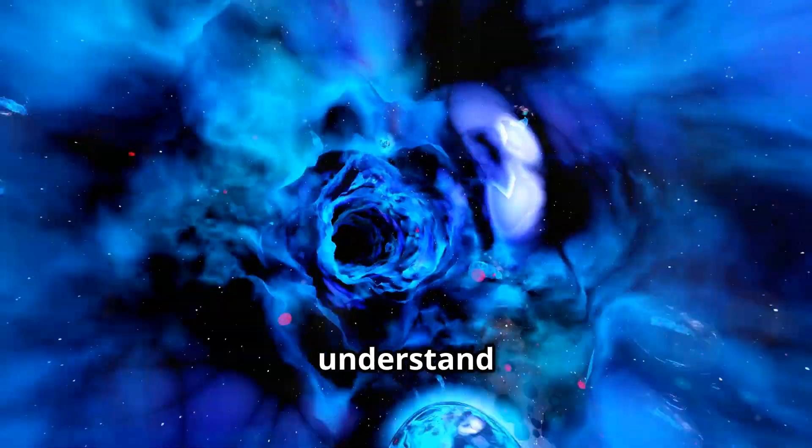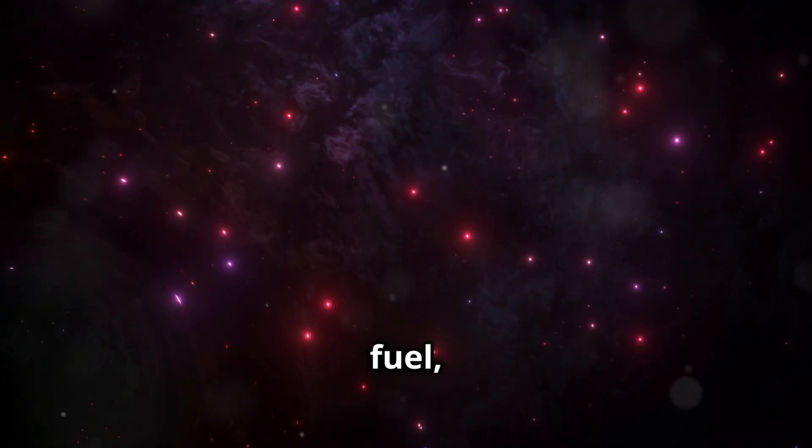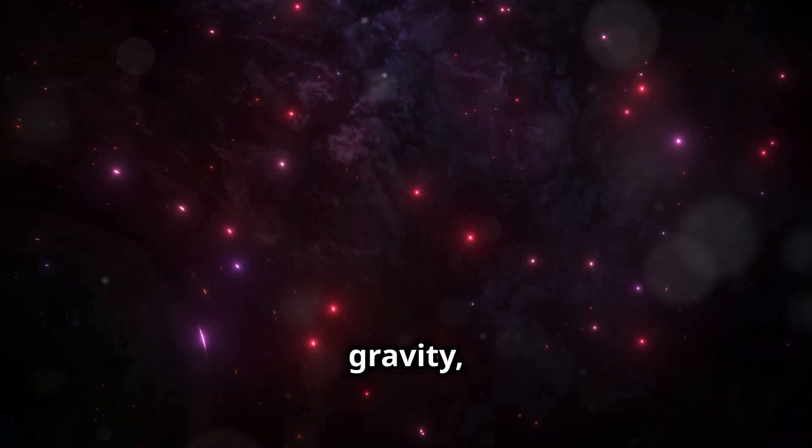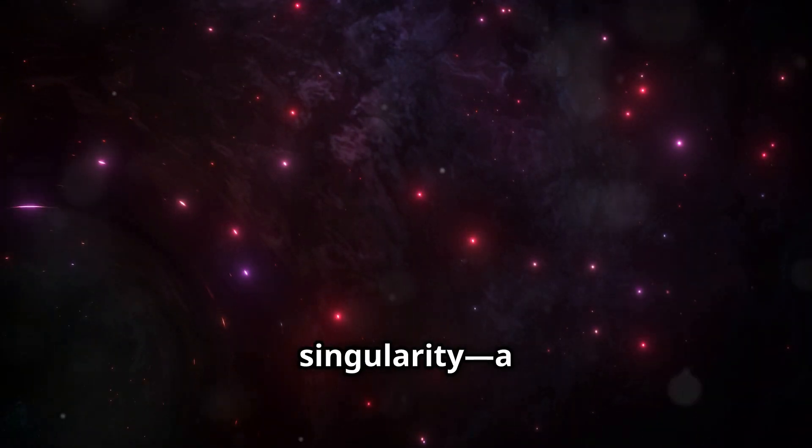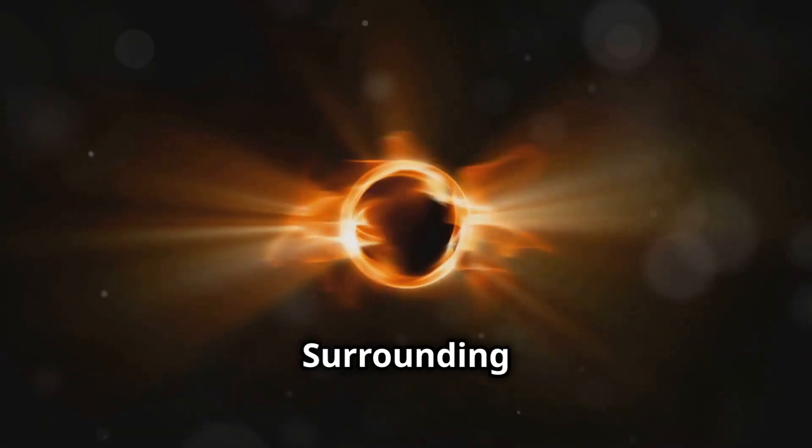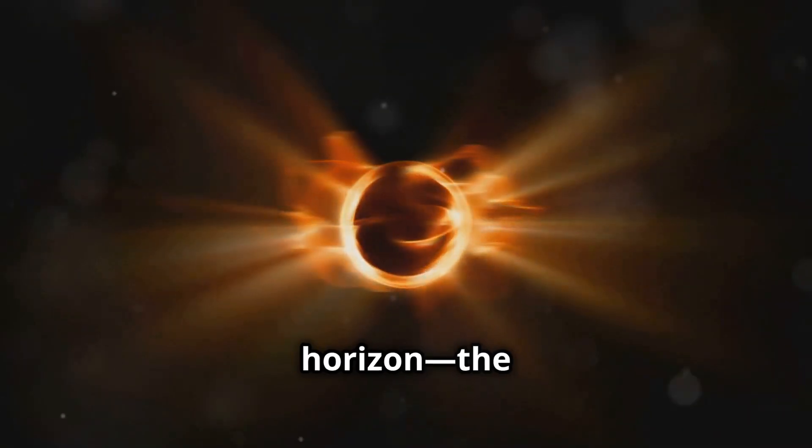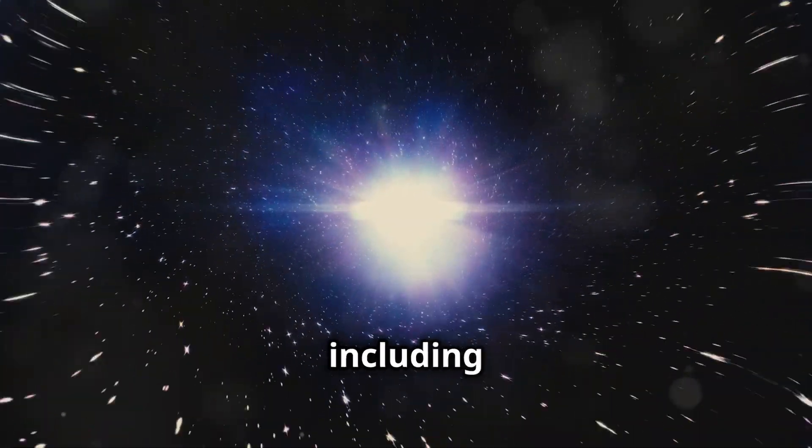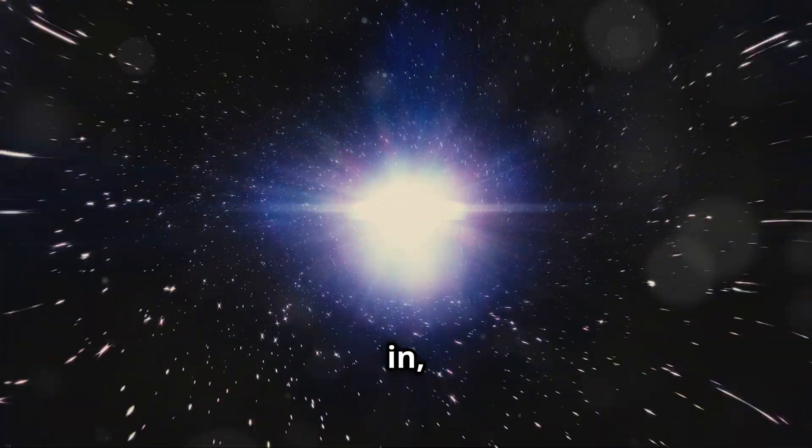First, let's understand what a black hole is. Picture a star much larger than our sun. As it runs out of fuel, it collapses under its own gravity, forming a singularity, a point of infinite density. Surrounding this singularity is the event horizon, the point of no return. Anything that crosses this boundary, including light, is sucked in, never to escape.